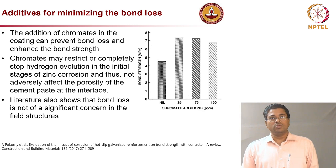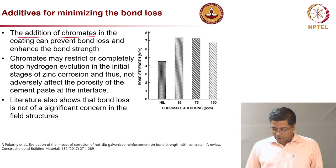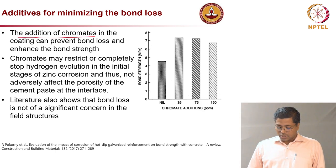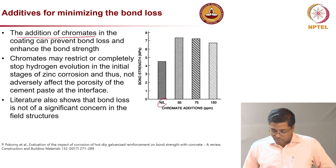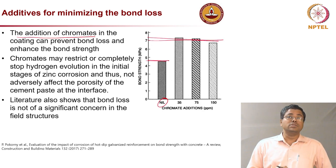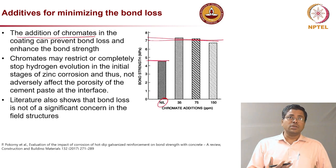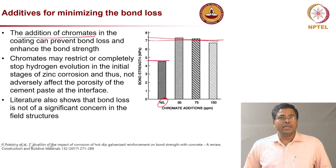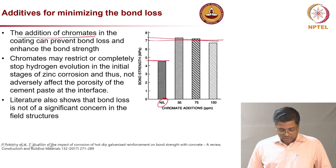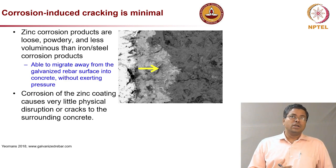Regarding the hydrogen evolution and bond loss issue, the addition of chromates was tried. It was found that when you add chromates to the zinc coating, the bond loss is actually not really present. Without chromate, bond strength is about four to five; with chromate at different concentrations, bond strength is about seven. So with a zinc coating with chromate, you don't need to worry about bond strength loss.